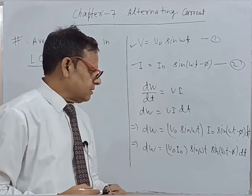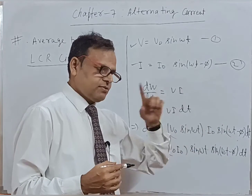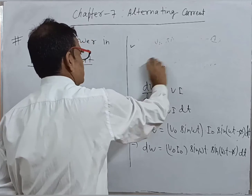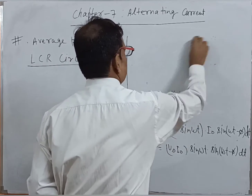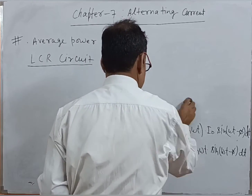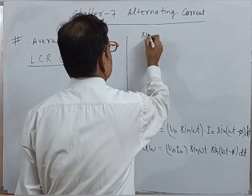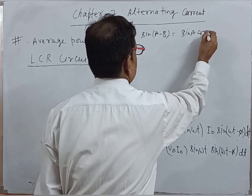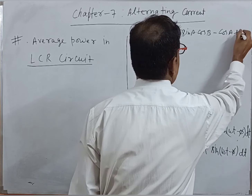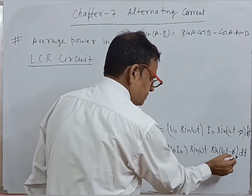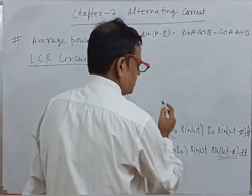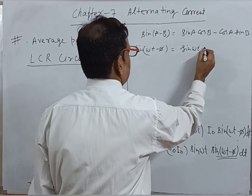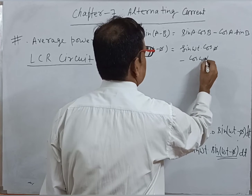One thing I would like to say: sin(ωt − φ) means sin(A − B). To simplify it, it is necessary to write the formula of sin(A − B). What is sin(A − B)? sin(A − B) = sin A · cos B − cos A · sin B. Applying this formula: sin(ωt − φ) = sin ωt · cos φ − cos ωt · sin φ.